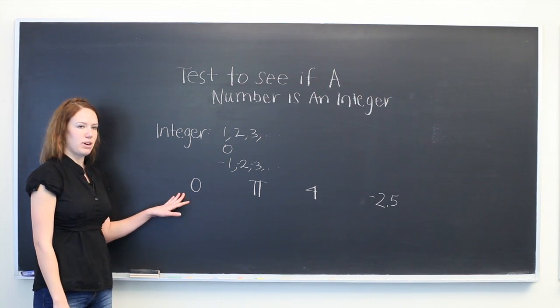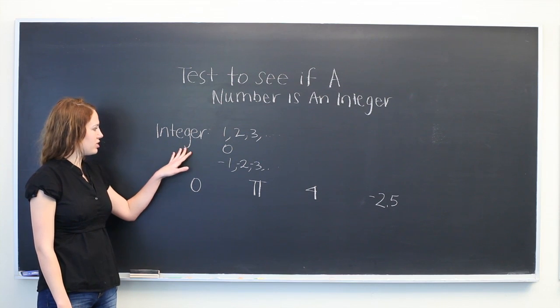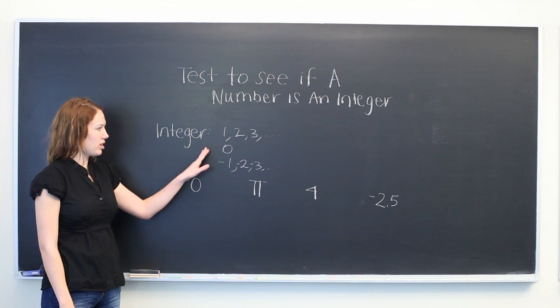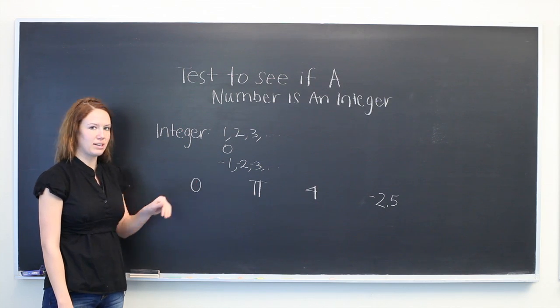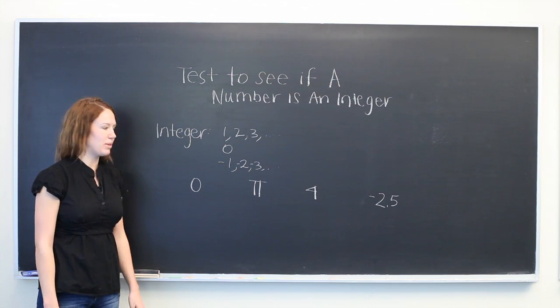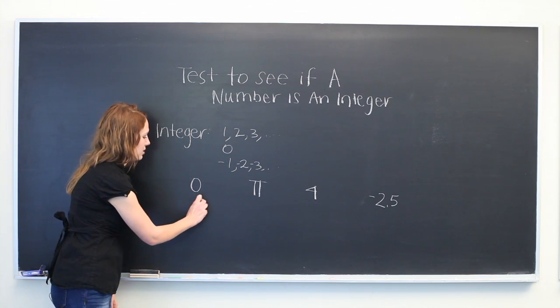So the first one is 0. Based on our definition, we ask: does 0 fall in the categories of whole positive numbers, whole negative numbers, or 0? And we see that it does, so this is an integer.